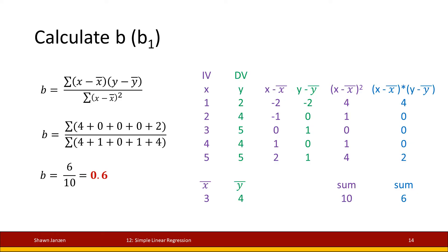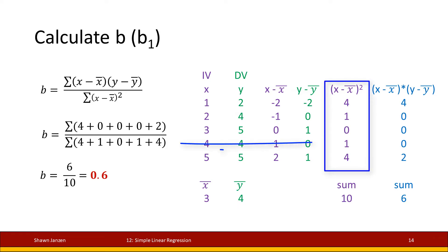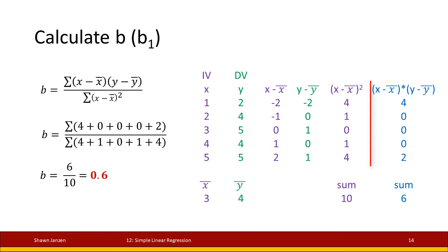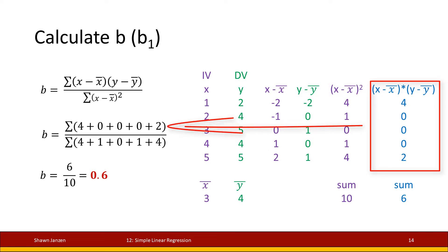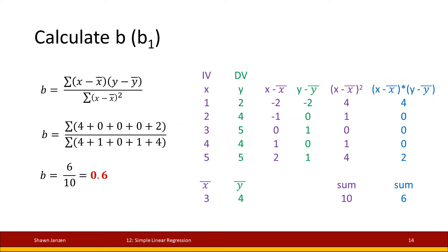Once we have those columns, we use one of the slope formulas: the denominator is the sum of (x minus x-bar) squared, and the numerator is the sum of (x minus x-bar) times (y minus y-bar). Summing both gives us 6 over 10, which simplifies to 0.6. So our slope b1 is 0.6 — meaning for every additional one unit increase in x, y increases by 0.6 units on average.